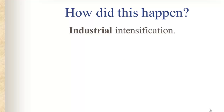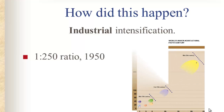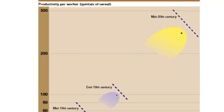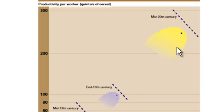The answer is industrial intensification. By the 1950s in the United States, the ratio was one farmer could produce enough food to feed 250 people. This chart from the Food and Agricultural Organization of the United Nations shows that: the little dot is one farmer, and the yellow area represents the 250 people being fed — the dot is right at about 250, at the middle of the 20th century.